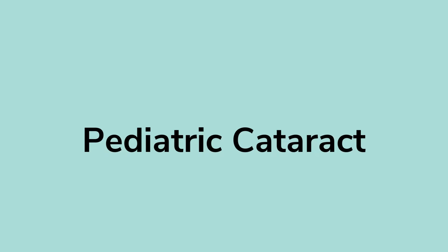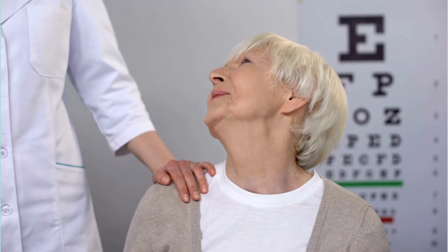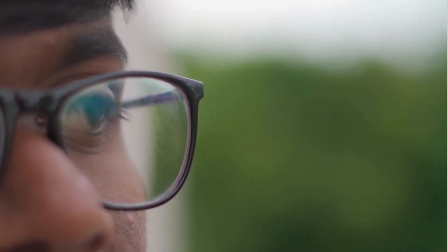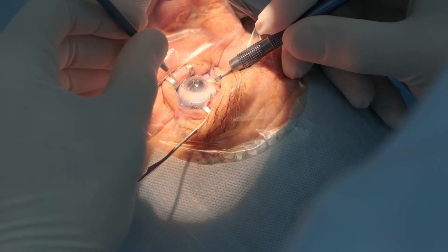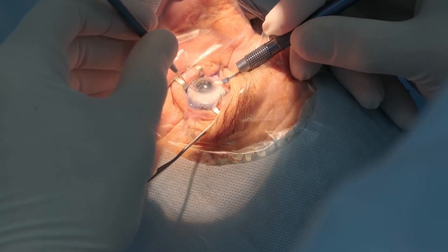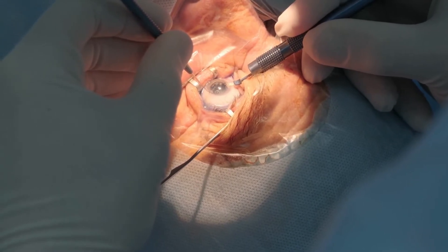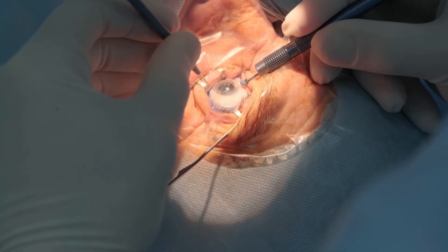Pediatric Cataract — not only adults but children can get cataract too; some kids are, in fact, born with it. In this condition, the eye appears cloudy, which leads to blurred vision. It is also one of the leading causes of childhood blindness, hence early detection and treatment are critical. You need to consult a pediatric eye specialist who can suggest a treatment based on the severity of the cataract, but most kids do need surgery in such cases.